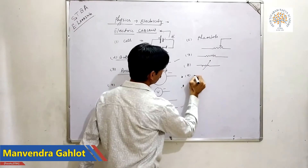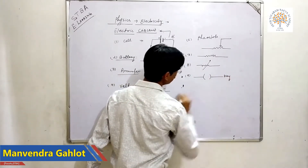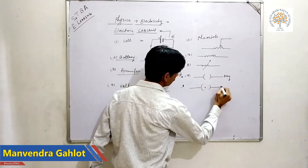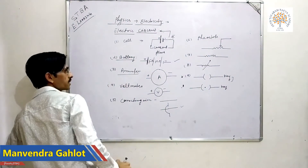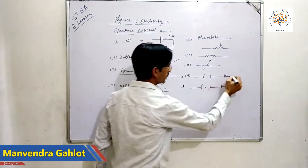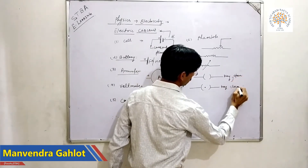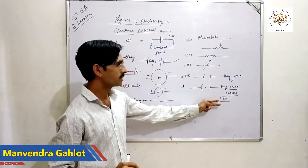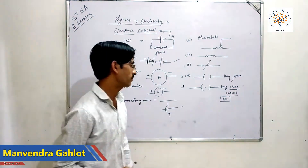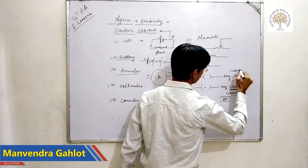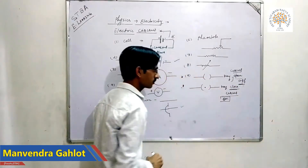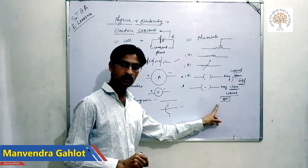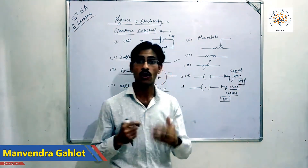Next is the symbol of a key, which means switch. There are two key symbols. This is an open circuit — the off situation. And this is a closed circuit — the on condition of a fan, tube light, bulb, or whatever. Open means off; closed means on.